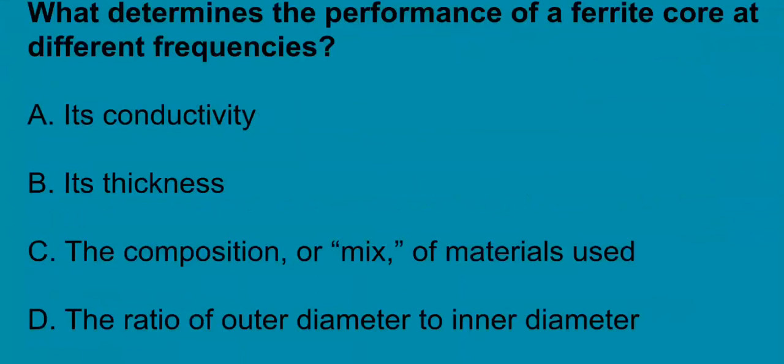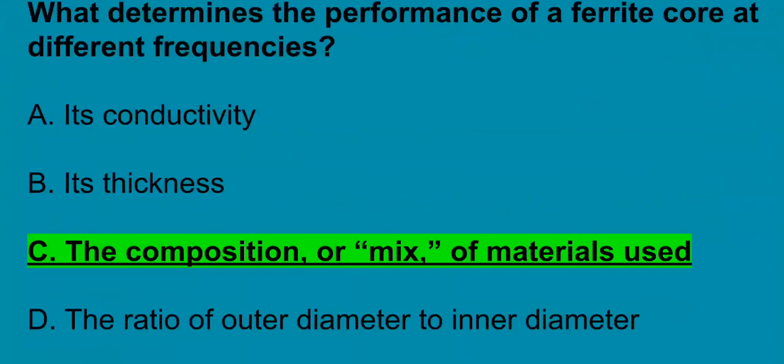G6B01 says, what determines the performance of a ferrite core at different frequencies? And it's the composition or mix of materials used.